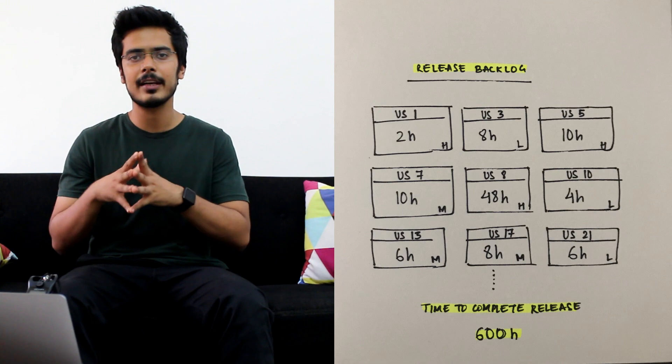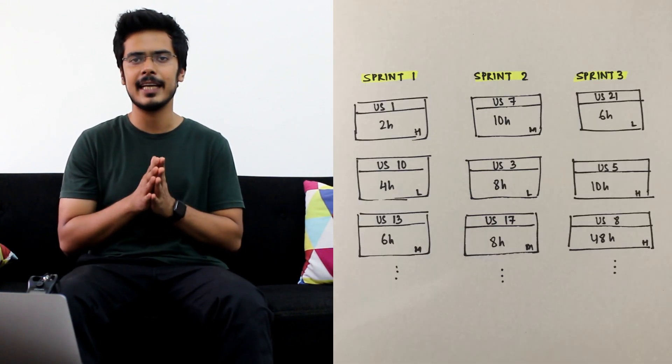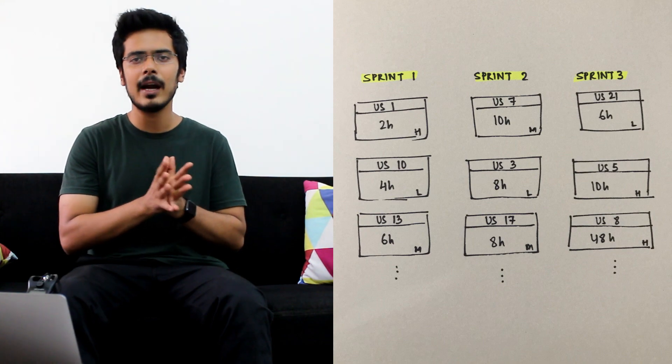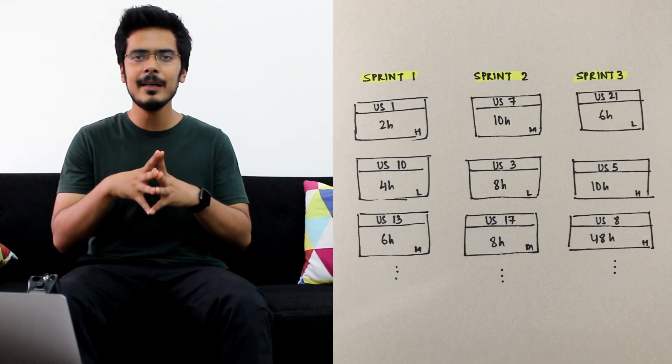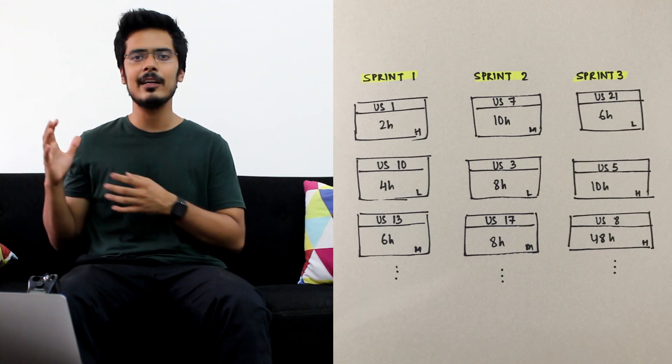Now the user stories from the release backlog is used to plan sprints during the sprint planning meeting. A sprint is essentially a short duration of time, typically anywhere between one to four weeks, where the development team picks a set of user stories that they can ship at the end of the sprint.